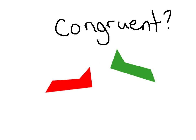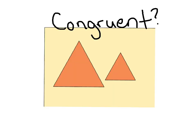Are these two shapes congruent? Yes, they are. They are the same shape and the same size — what's happened is they have been flipped. What about these shapes? Are they congruent? No, they are not congruent. They are similar shapes.